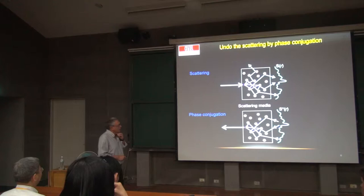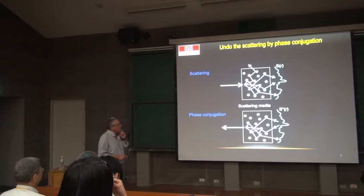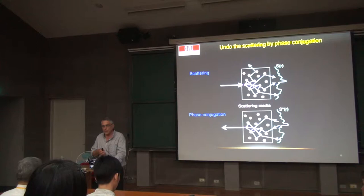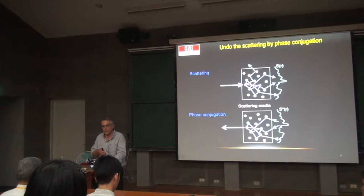The problem — even though this idea has been around for a long time — is that it hasn't really provided a solution to imaging behind a scattering medium, because the phase conjugation needs to be done inside the scattering medium. If I want to see inside my hand, I have to illuminate it, go inside, change the phase, conjugate it, and have the light come back out. The question is: how am I going to put something inside my hand to do the conjugation? A lot of the research activity has to do with trying to solve this problem.